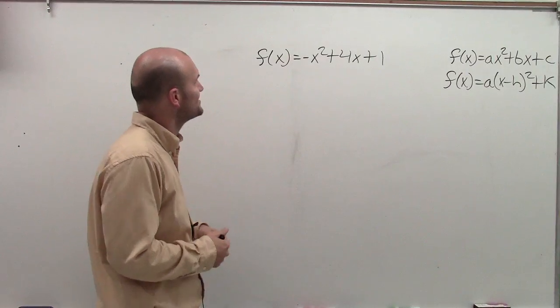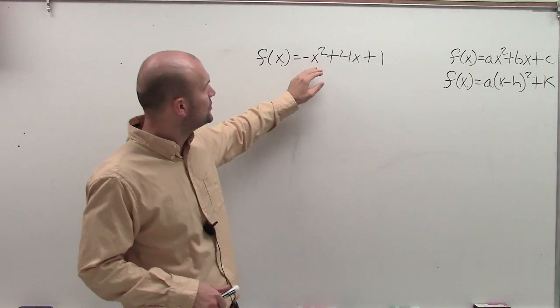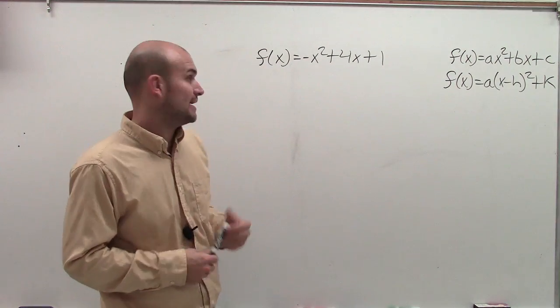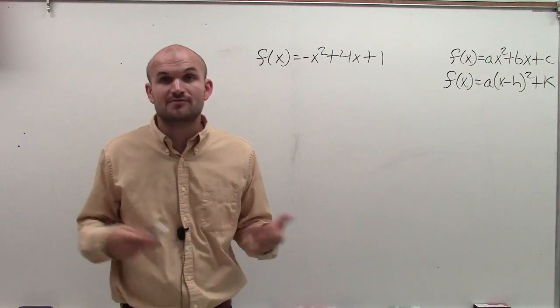Welcome. So here we go. What I want to do is show you how to find the vertex and the x-intercepts of this quadratic, f of x equals negative x squared plus 4x plus 1.